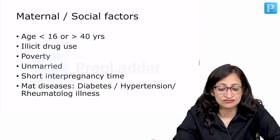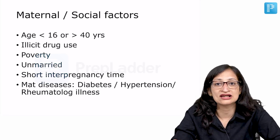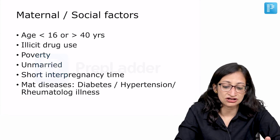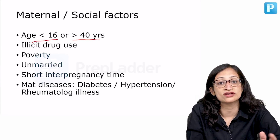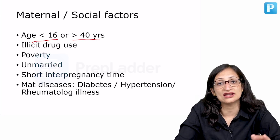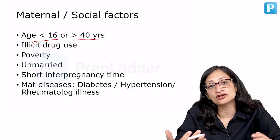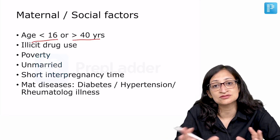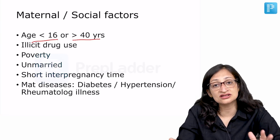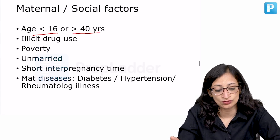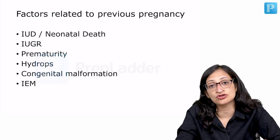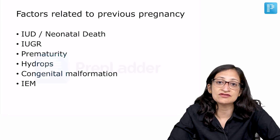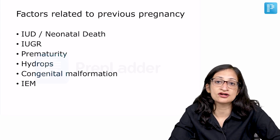A high risk infant is one more at risk of developing complications, morbidity and mortality compared to normal babies. Maternal and social risk factors include: maternal age less than 16 or more than 40 years, illicit drug use such as cocaine, alcohol or smoking, poverty, single parent or unmarried status, and short inter-pregnancy intervals. Maternal diseases like diabetes, hypertension or rheumatological illness also impose risk. Previous pregnancy factors include prior intrauterine death, neonatal death, IUGR, prematurity, hydrops, or congenital malformations in a previous baby.